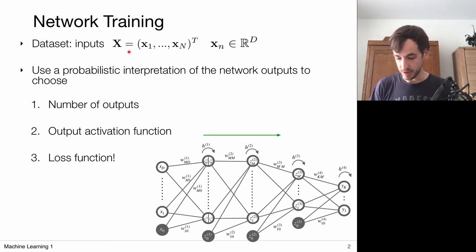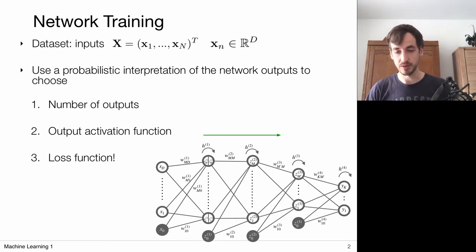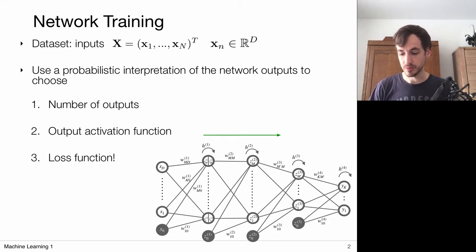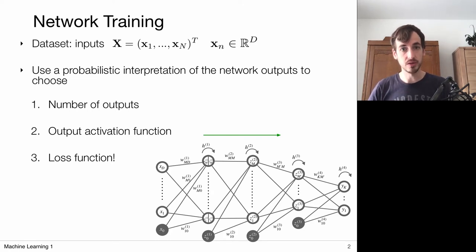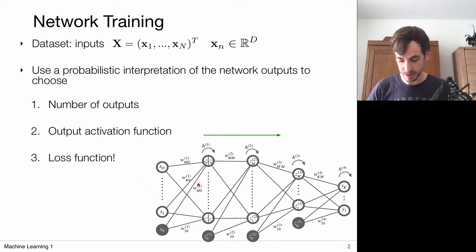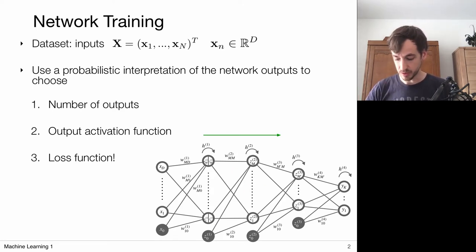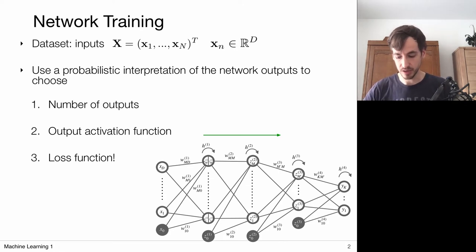The setting is that we are provided with a dataset of measurements and we want to do something useful with it. In regression and classification problems, we also have targets associated with the data points. We're going to design neural networks that map these inputs to some output — you can make a very complex design, be creative with it. But now we're going to focus on the outputs and on training such neural networks.